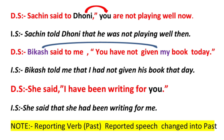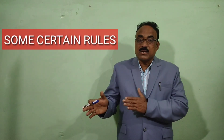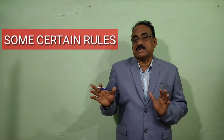Another example: She said, 'I have been writing for you.' In indirect speech: 'She said that she had been writing for me.' 'You' changes into 'me'. The most important point is: when you get the reporting verb in past, the reported speech must be changed into past. However, there are some certain rules about what is to be changed and what is not.